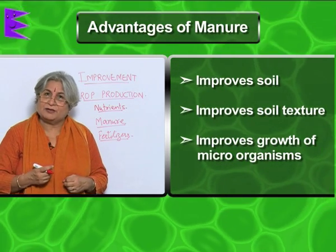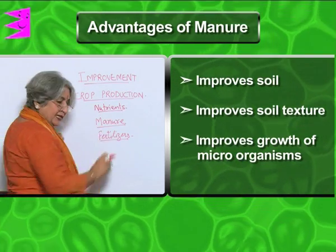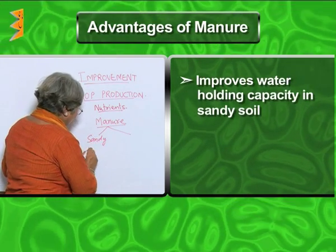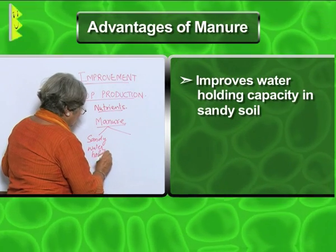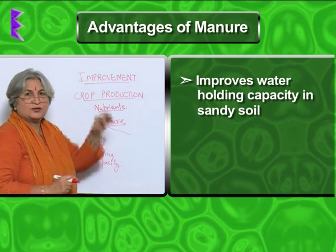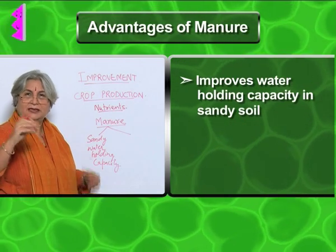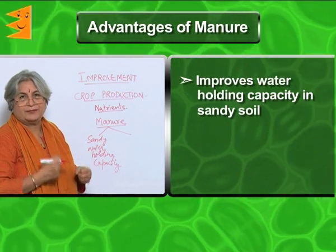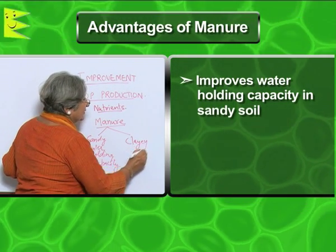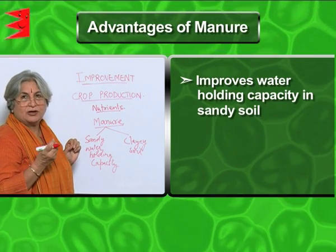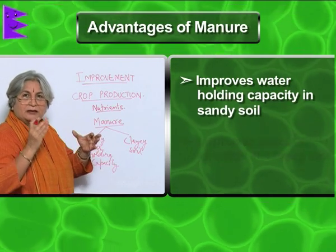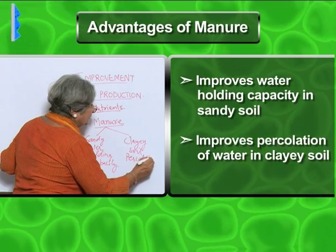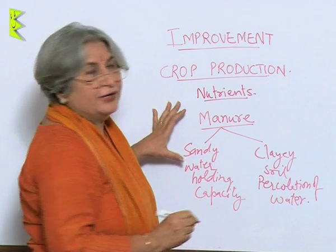Manure has another advantage: it is suitable for all kinds of soil. In sandy soil, the particles are very coarse so water runs through very fast — but adding manure improves the water holding capacity. In clay soil, the particles are so small that the soil becomes water-logged, but by adding manure its ability to percolate water improves. So in addition to adding organic matter, manure can do many things.